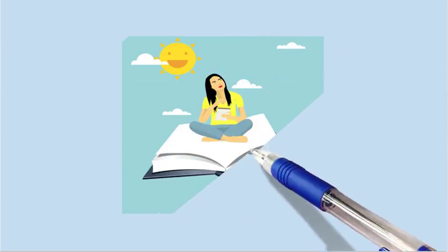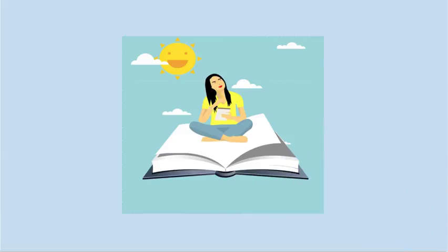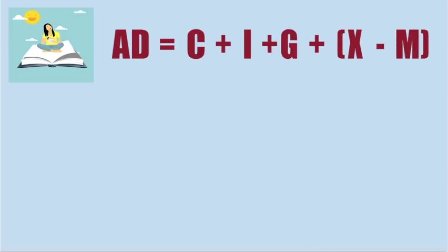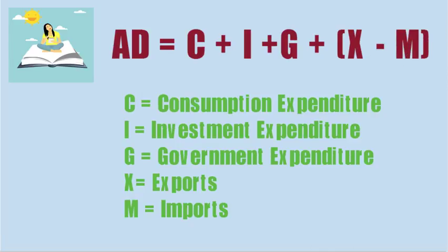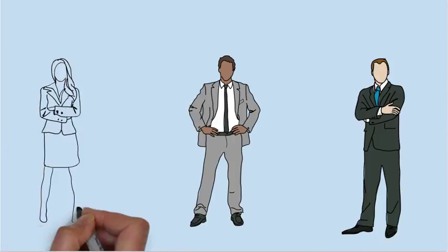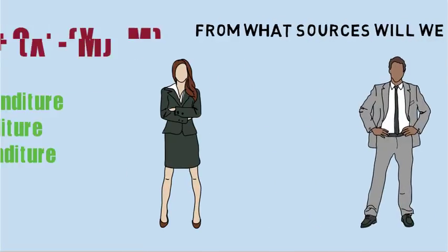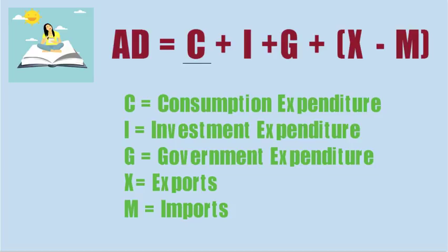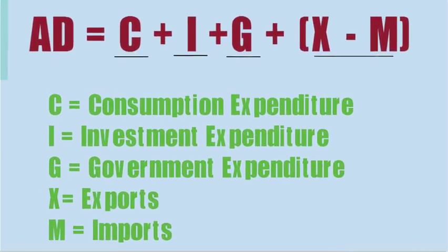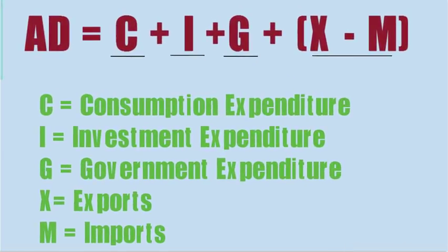Thinking of aggregate demand this way helps because then we can express aggregate demand in a very concise expression. From what sources will entrepreneurs of a country expect to receive revenue? From the expenditure that people do for consumption, from the expenditure that people do on investments, the expenditure that government does for the welfare of the people, and last but not the least, from the exports that businesses have done to foreign countries. We will analyze each of them one by one.